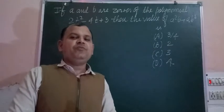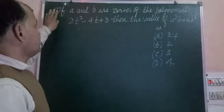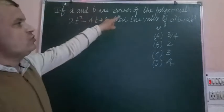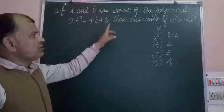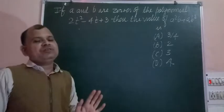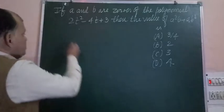Here is a question from polynomials. The question is saying that if A and B are zeros of the polynomial 2T² - 4T + 3, then find the value of A² + B + AB².